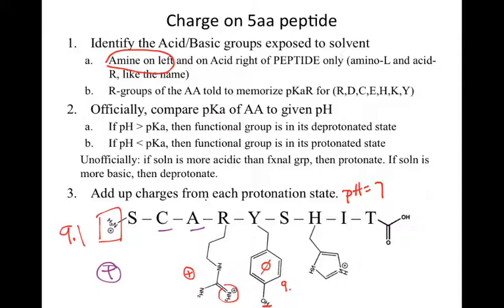We then move to histidine — which is unfortunately flipped here, but that's the way it goes. All of these were conveniently drawn at pH 7, so we do know that histidine is positive.